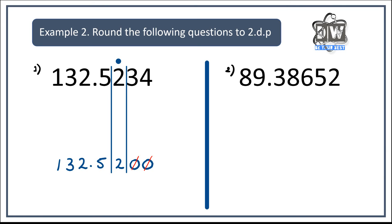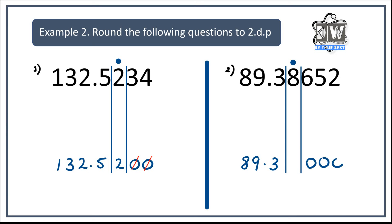I'm not going to do any more for you — you're going to do the rest yourself. Pause the video, give it a go, come back and see if you got it right. So the number we're rounding is the eight — we column it. Numbers before the column stay the same: 89.3. Numbers after the column turn into zeros. The number in the column will go up by one because the digit to its right is six, which is five or more. The answer is 89.39.